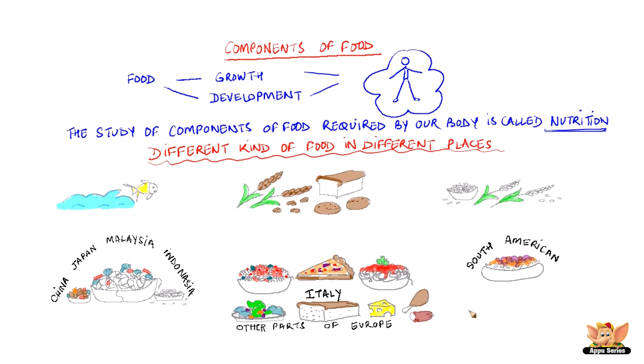South American cuisine consists of rice with beans and vegetables. Mexico has burritos which are made out of corn flour, vegetables, meat and beans.